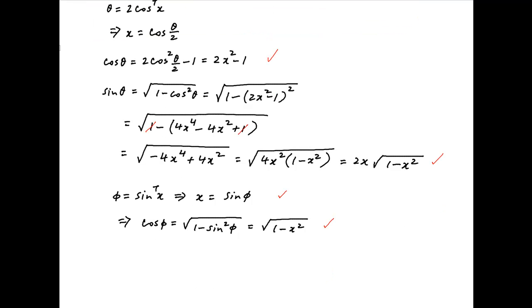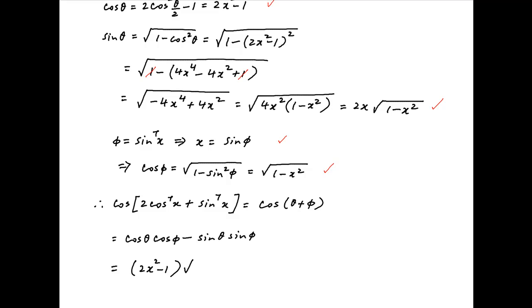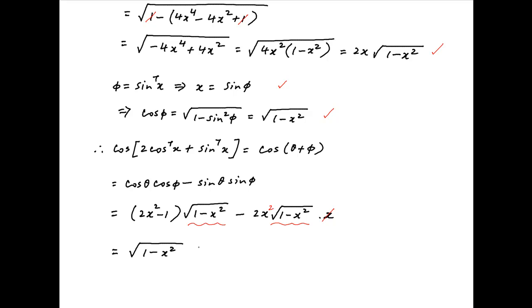Plugging in the values of cos theta, sin theta, cos phi, and sin phi obtained above, the given expression cos of (2 times cos inverse x plus sin inverse x), or cos of (theta plus phi), is equal to (2x squared minus 1) times root of (1 minus x squared) minus 2x times square root of (1 minus x squared). Taking square root of (1 minus x squared) common, this is equal to square root of (1 minus x squared) times (2x squared minus 1 minus 2x). The 2x squared cancels inside the brackets and the expression simplifies to minus square root of 1 minus x squared.